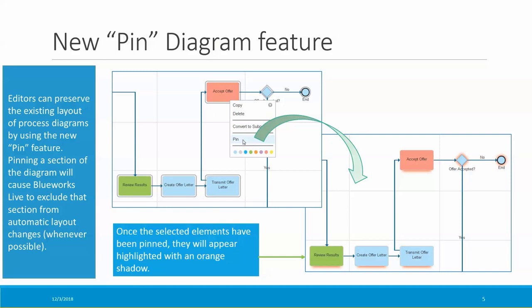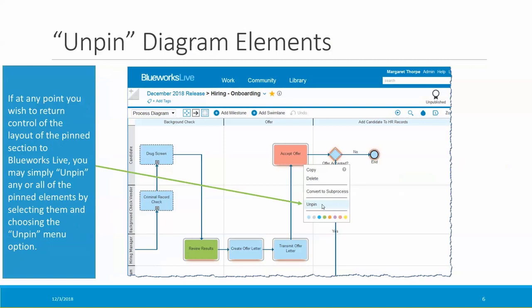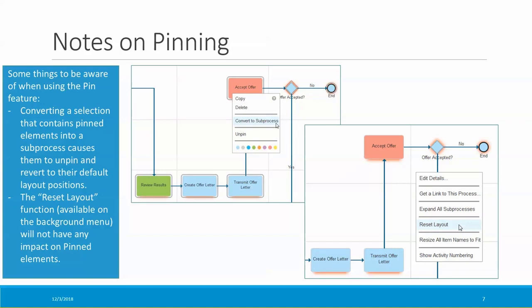Other users editing the diagram will see the orange highlighting, but for anybody just viewing the diagram, those highlights will not be visible. If at any point I want to return control of the layout to BlueWorks Live, I can simply unpin any or all of the pinned elements by selecting them and choosing the unpin menu option. Note that if you convert a selection containing pinned elements into a sub-process, that will cause them to unpin. And the reset layout function will not have any impact on pinned elements.